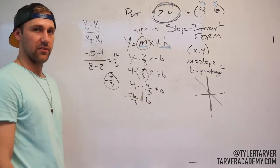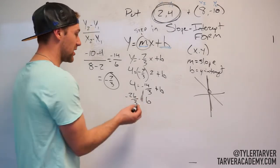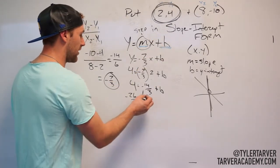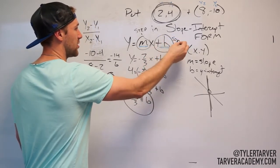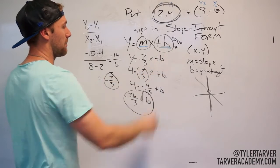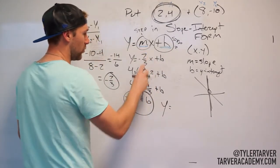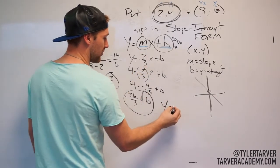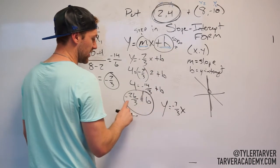This is the ugliest problem ever. I'm sorry. But it is how to work it, and you're going to get ugly problems occasionally, especially if they just make it up off the top of their head. So I found my b, which is step 2, okay? So now I'll just plug those in and I'm done. So I've got y equals m, which we know is negative 7 over 3, x plus b, which is,